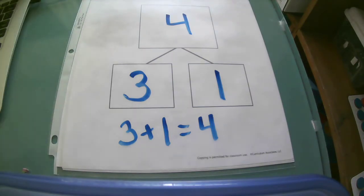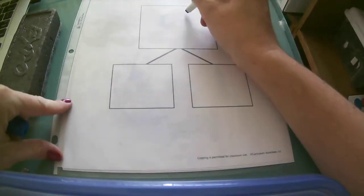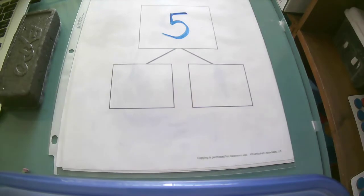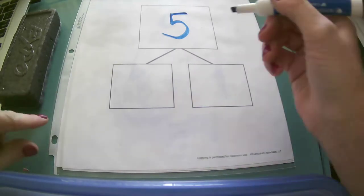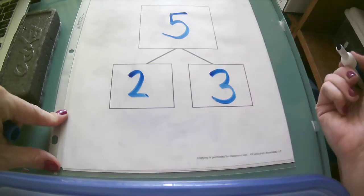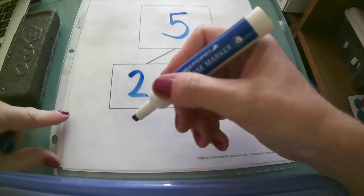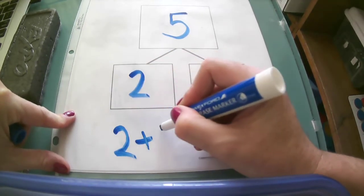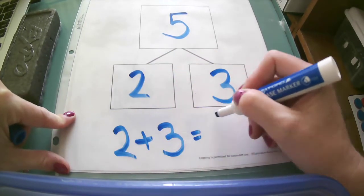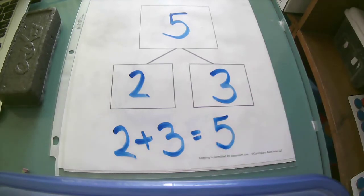Let's try another one using that equal sign. This time we're going to be using the whole 5. So if I have a part 2 and a part 3, I can create a number sentence using the equal sign. I know that 2 and 3 together equal 5, or 2 plus 3 are the same as 5.